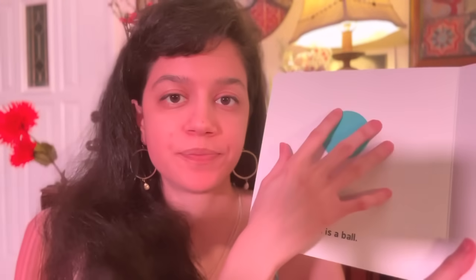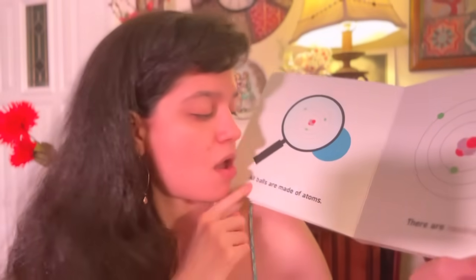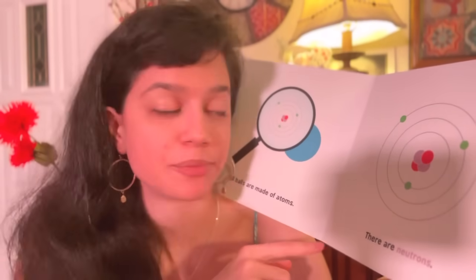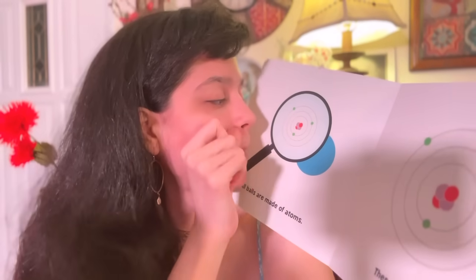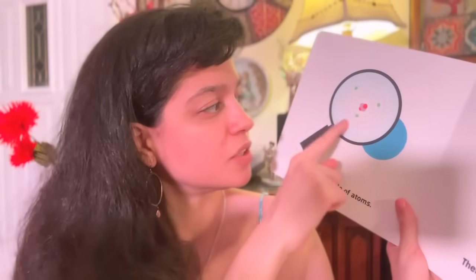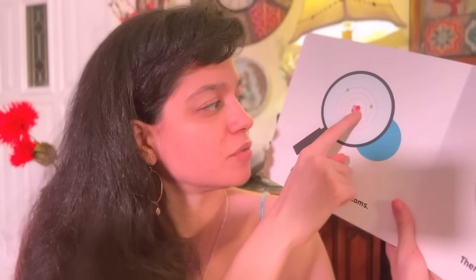This is a ball. This ball has energy. This is a ball. This ball has zero energy. No energy. All balls are made of atoms — little tiny atoms. The electrons are the ones that are over here, and the neutrons and protons are the ones that are right here.